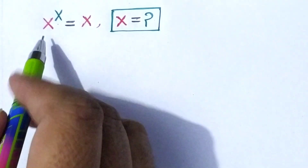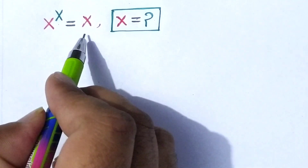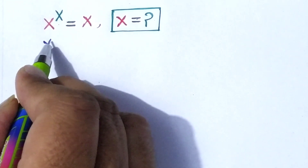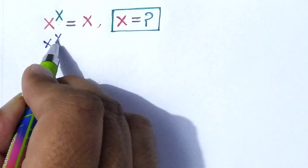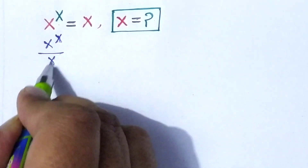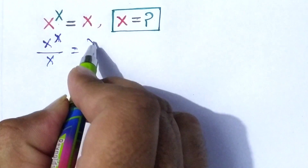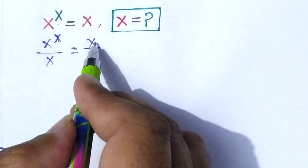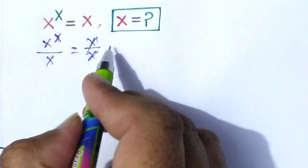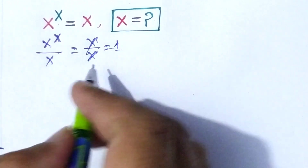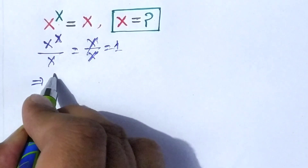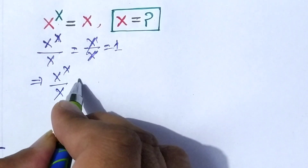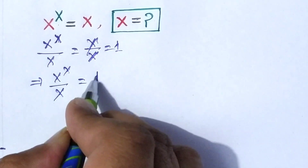Friends, divide both sides by x. x to the power of x divided by x is equal to x divided by x. The x's cancel out, so it will be equal to 1. This implies that x to the power of x divided by x is equal to 1.